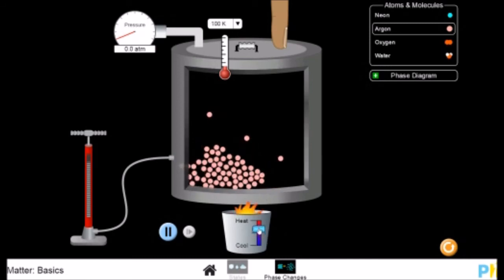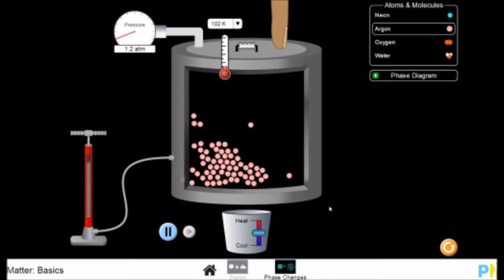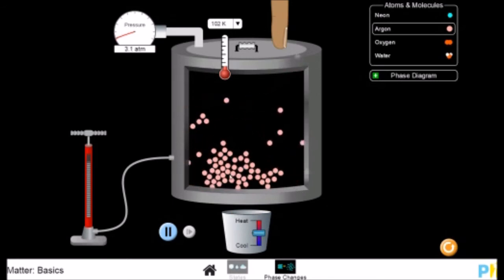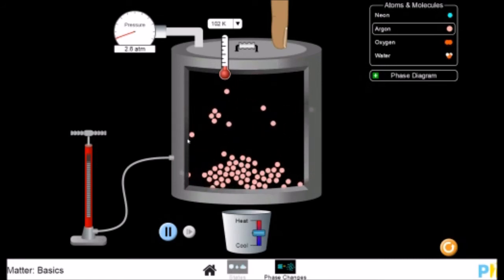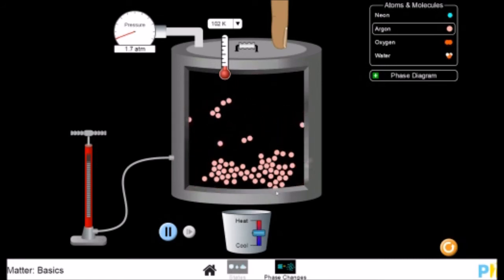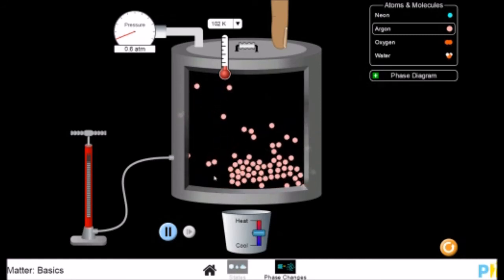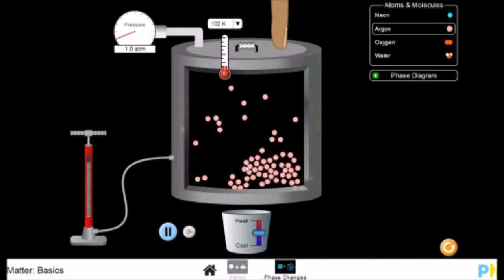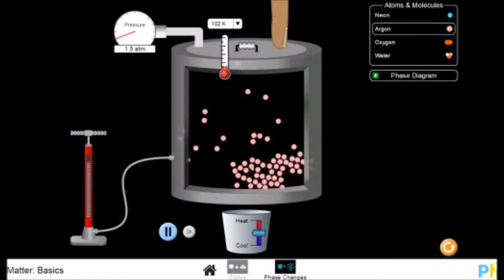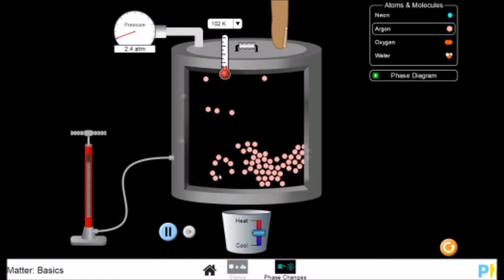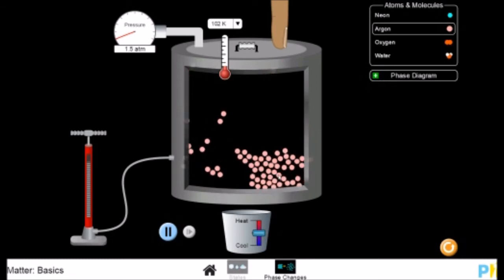I'm turning up the heat even more. And now you can see as the average energy increases, the chance that a particular molecule will have enough energy to leave the liquid is much higher. So it's much more probable that one of these molecules by random collision will get enough energy to leave the liquid. So now we have a fairly large gas population. Each one of those gas molecules has taken energy away from the liquid.